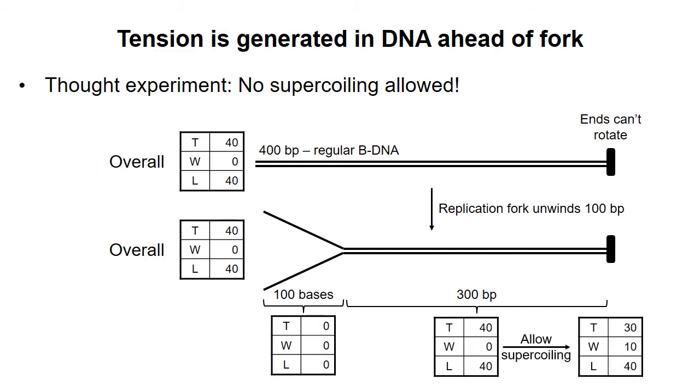If we allow supercoiling, then the twist will return to 30, or 10 base pairs per turn. The linking number will be unchanged at 40, and so writhe must be positive 10. Therefore, ahead of the replication fork, positive supercoiling will be generated.